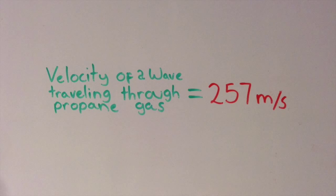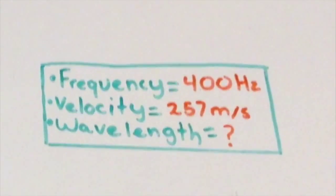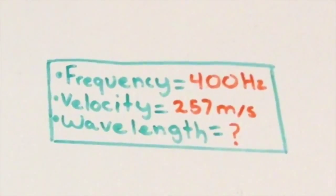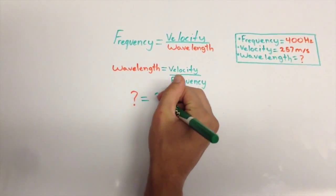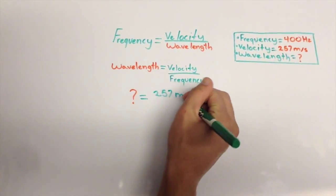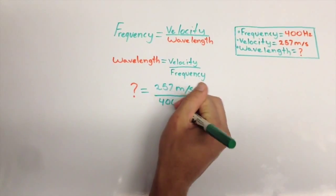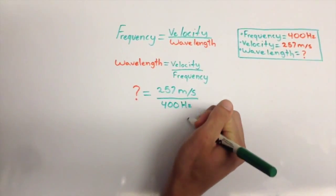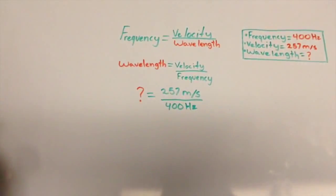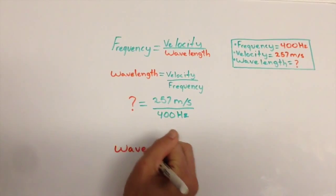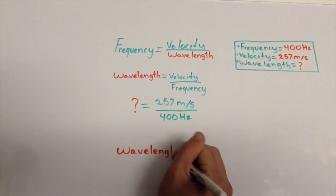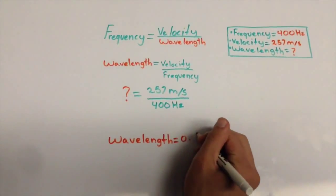velocity, frequency, and wavelength. One thing we need to know is the velocity of a wave traveling through propane gas is 257 meters per second. If I play a sound at 400 Hz, I could then plug in the values into the formula. 257 meters per second over 400 Hz will equal to the wavelength. The wavelength will equal to 642 thousandths of a meter.